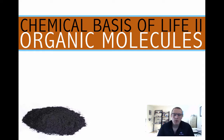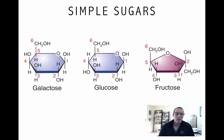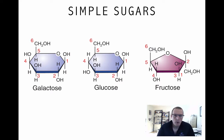We'll look at some simple sugars, then we'll look at some more complicated sugars called polysaccharides, and then we'll talk a little bit about structure and function at the end. So let's start off really simple. Here are some simple sugars, and these are probably pretty familiar to you. We've got galactose, glucose, and fructose, and these are all examples of hexose sugars.